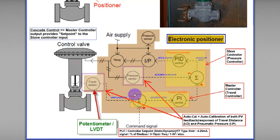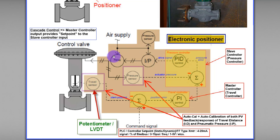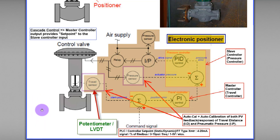In this electronic positioner, the travel controller is the master controller, and the pressure controller is the slave controller. As we know, a controller requires two inputs: one is the set point or command signal, which is given by another controller such as a PLC or DCS.